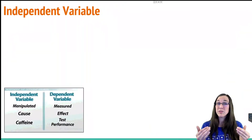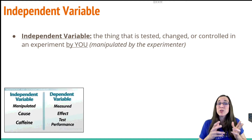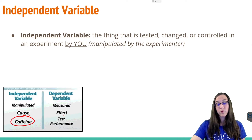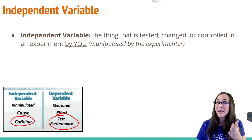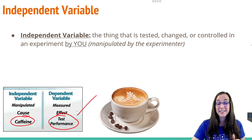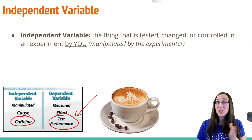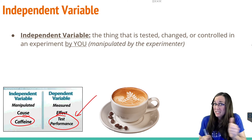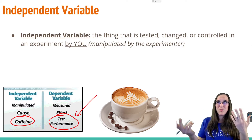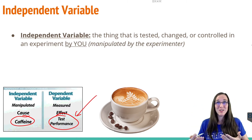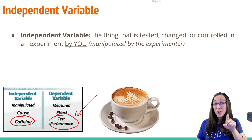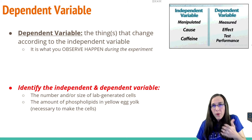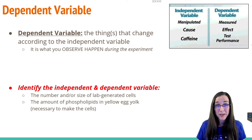Now the variables are where I saw a lot of students get confused. The independent variable is the thing that's tested — the thing that's changed or controlled in the experiment by you. For example, if we were looking at the effect of caffeine on test performance, caffeine would be the independent variable. You control how many cups of coffee your test participants drink. The dependent variable — their test performance — is the thing you measure for changes. Maybe 10 cups causes a plummet, but 2 cups yields 90% and higher. The dependent variable changes according to what the independent variable did.